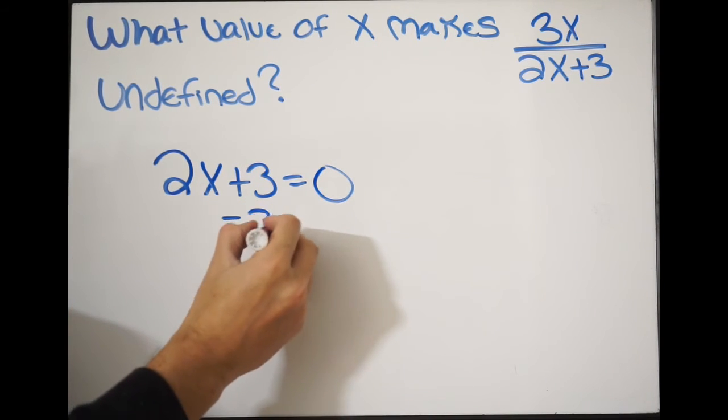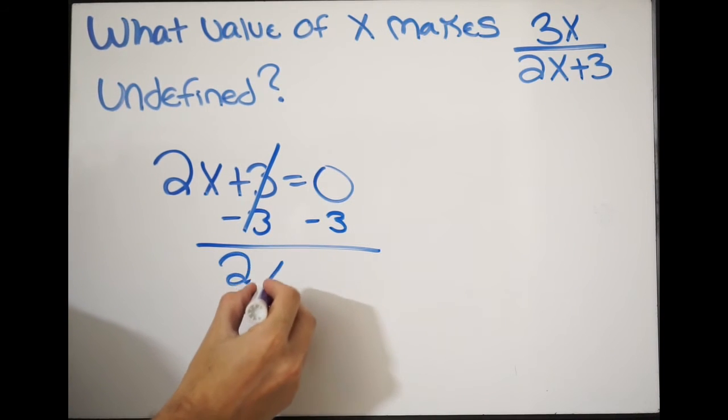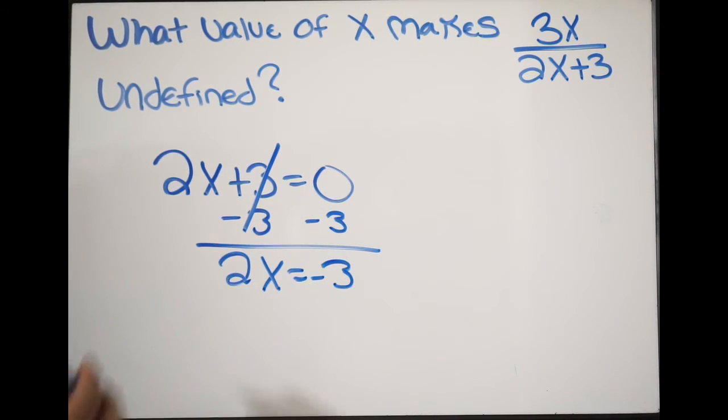Doing that, I get minus 3 on both sides. Now I get 2x equal to negative 3, and then I just divide both sides by 2.